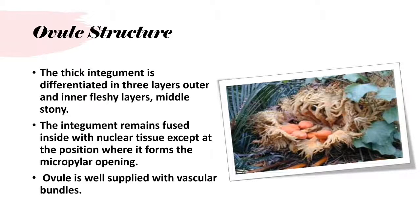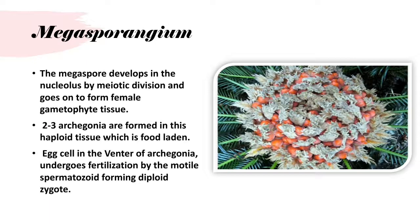Ovule structure: the thick integument is differentiated into three layers — outer fleshy layer, middle stony layer — and the integument remains fused inside with the nucellus except at the position where it forms the micropylar opening. The ovule is well supplied with vascular bundles. Megasporangium: the megaspore develops in the nucellus by meiotic division and goes on to form the female gametophyte.